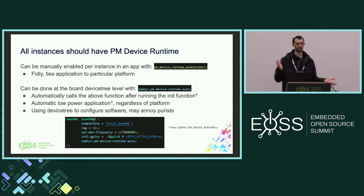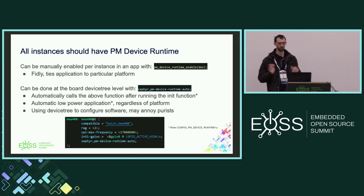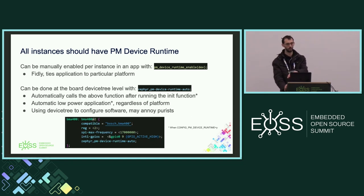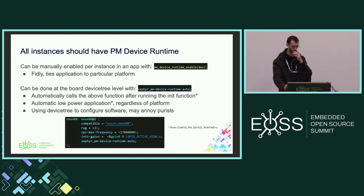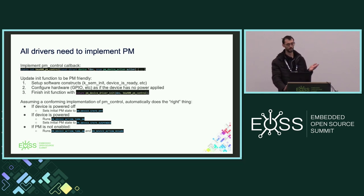Using device tree to configure software may annoy purists, but device tree is the mechanism we have for per-instance configuration — Kconfig is not really appropriate, and Kconfig has already been trying to move away from that, because it used to be 'UART0 enable, UART1 enable, UART2 enable' and it was a giant mess. Also, this only does anything if PM device runtime is enabled overall. If an application doesn't need it, the flag is just ignored — so there's no cost to putting this flag on devices.